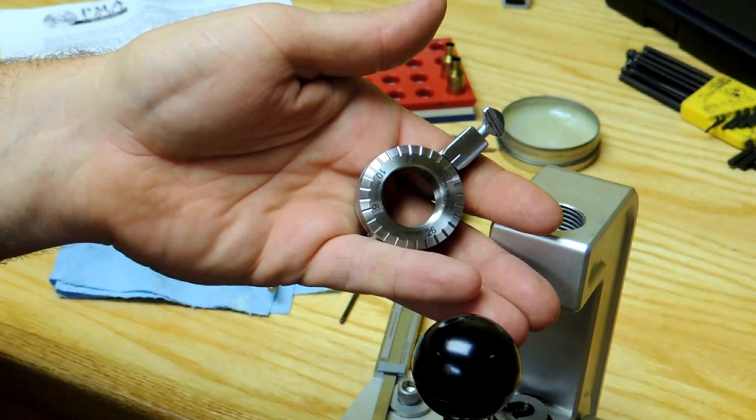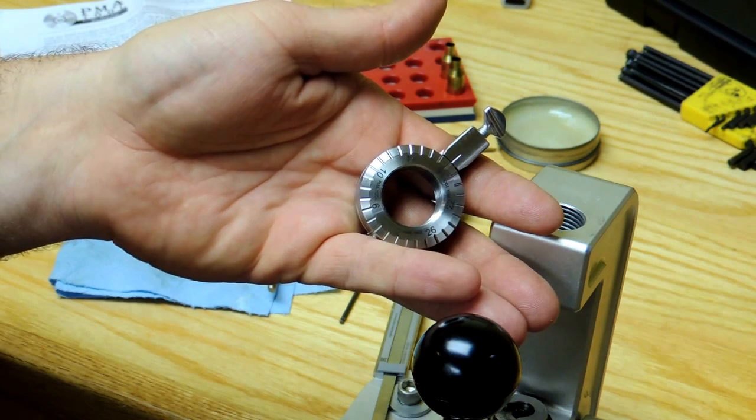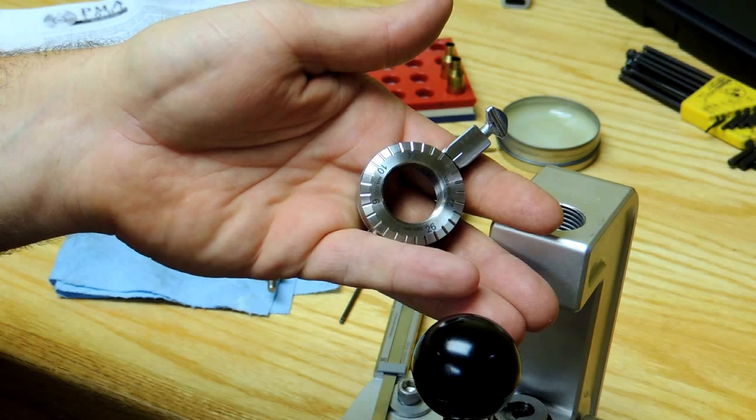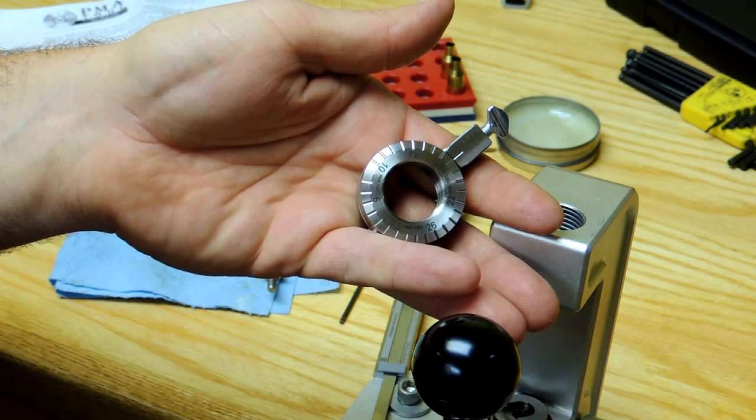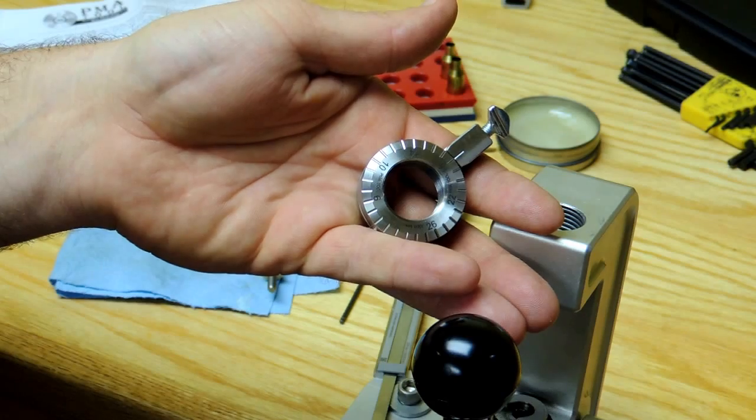As received from PMA Tool, the micro die adjuster has a total range of adjustment of 70 thousandths. That is 28 thousandths into the press for more shoulder bump and sizing and 42 thousandths for less.